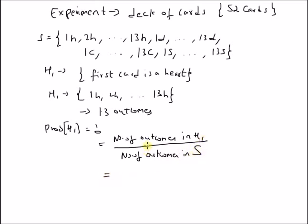We know that the number of outcomes in H1 are 13, and the sample space consists of 52 outcomes. So the probability of the event H1 will be 1 by 4.